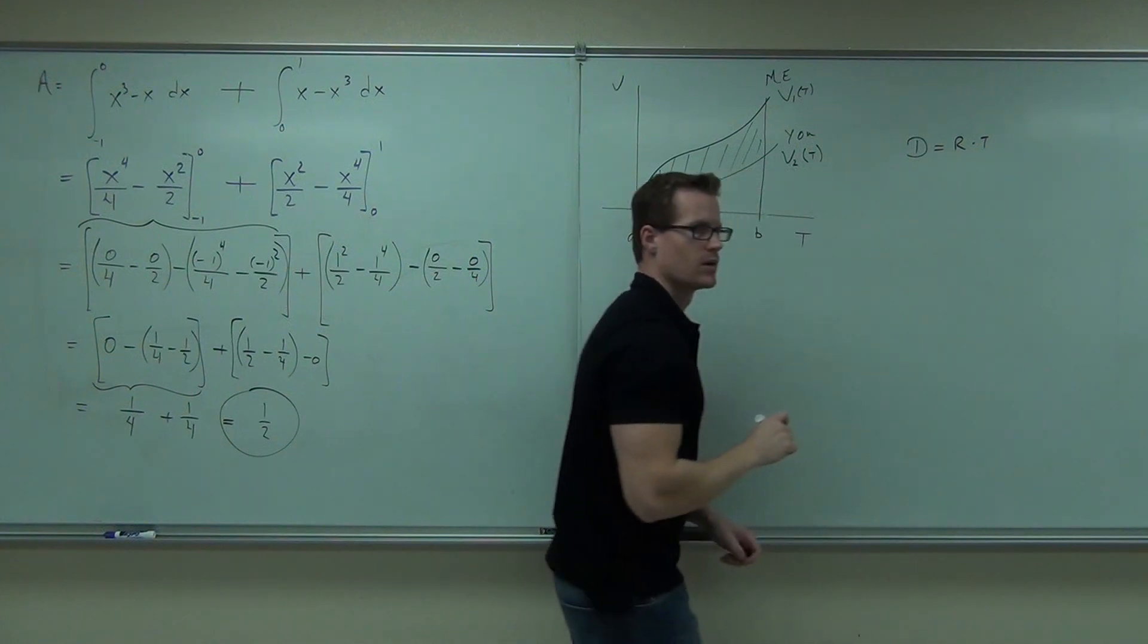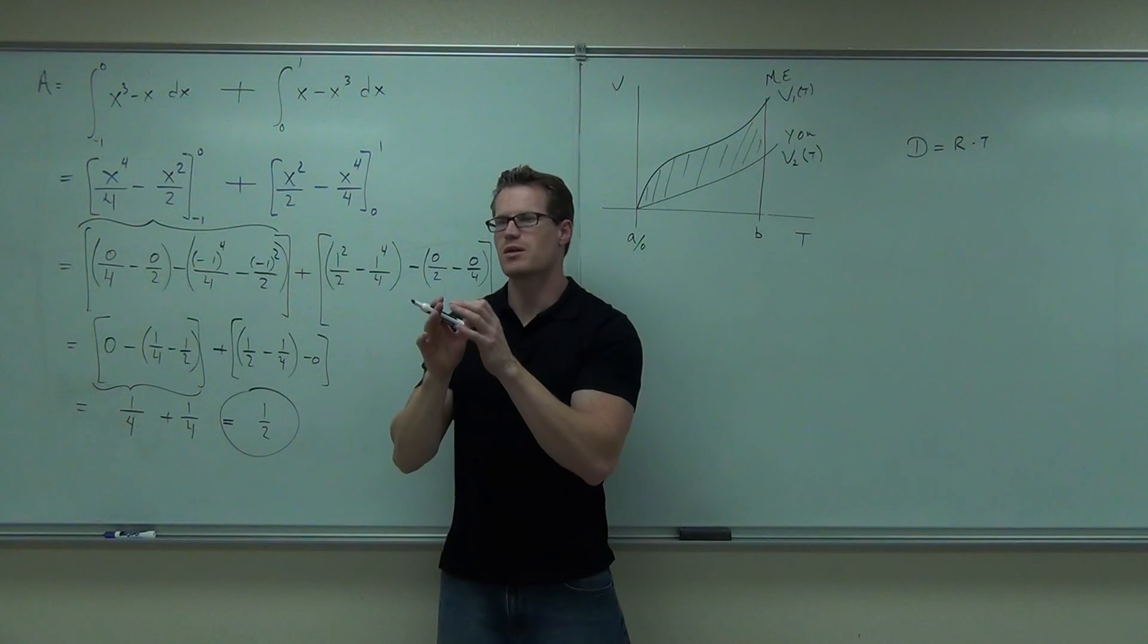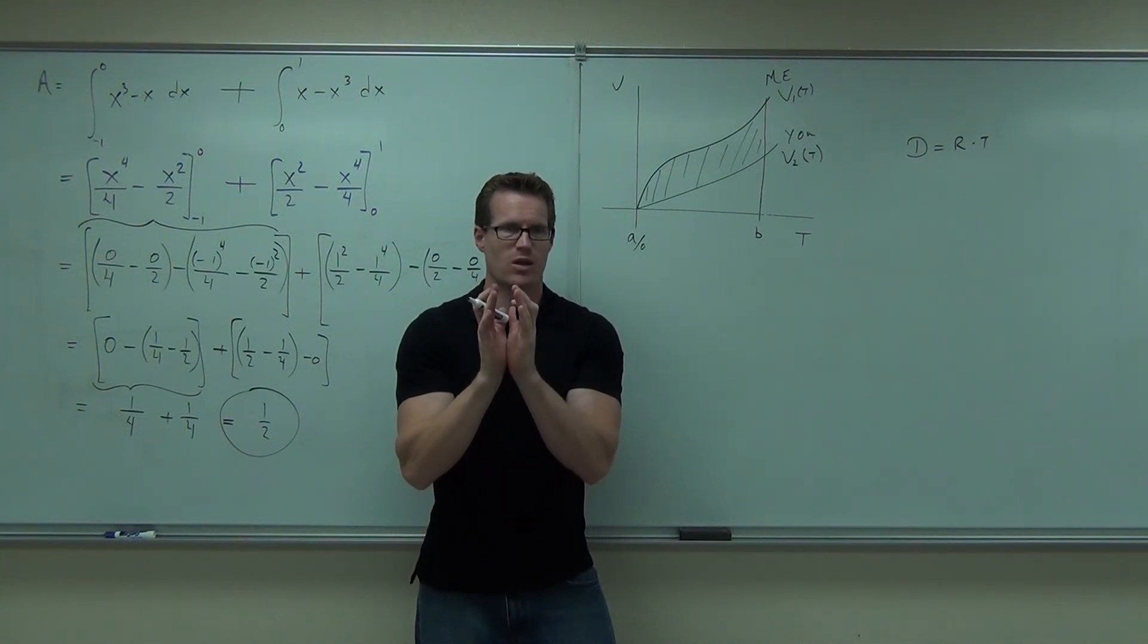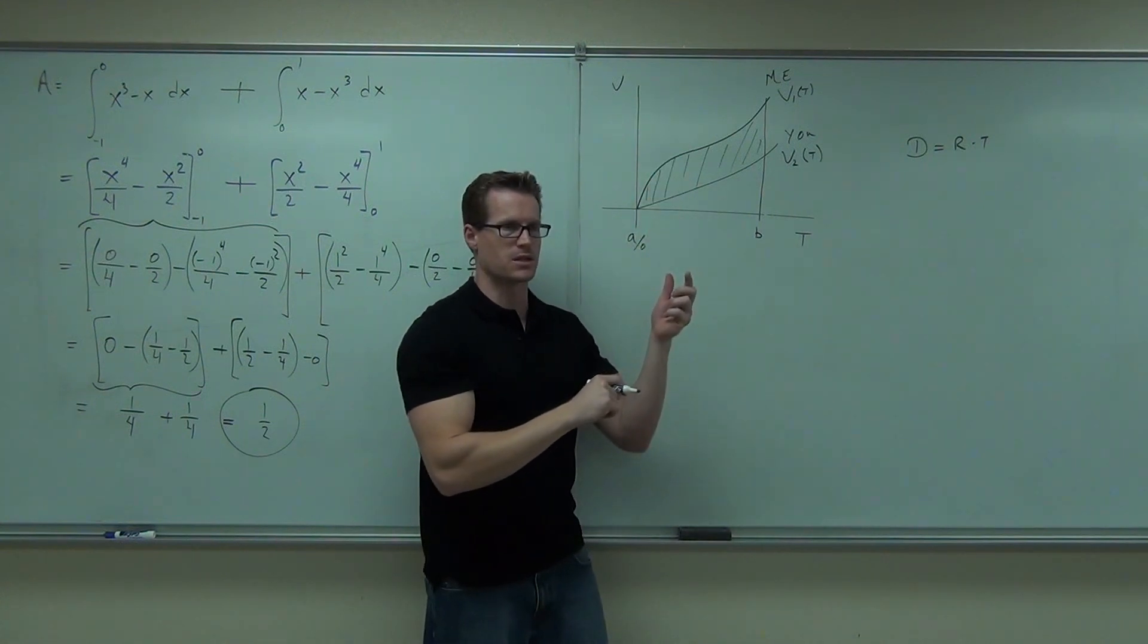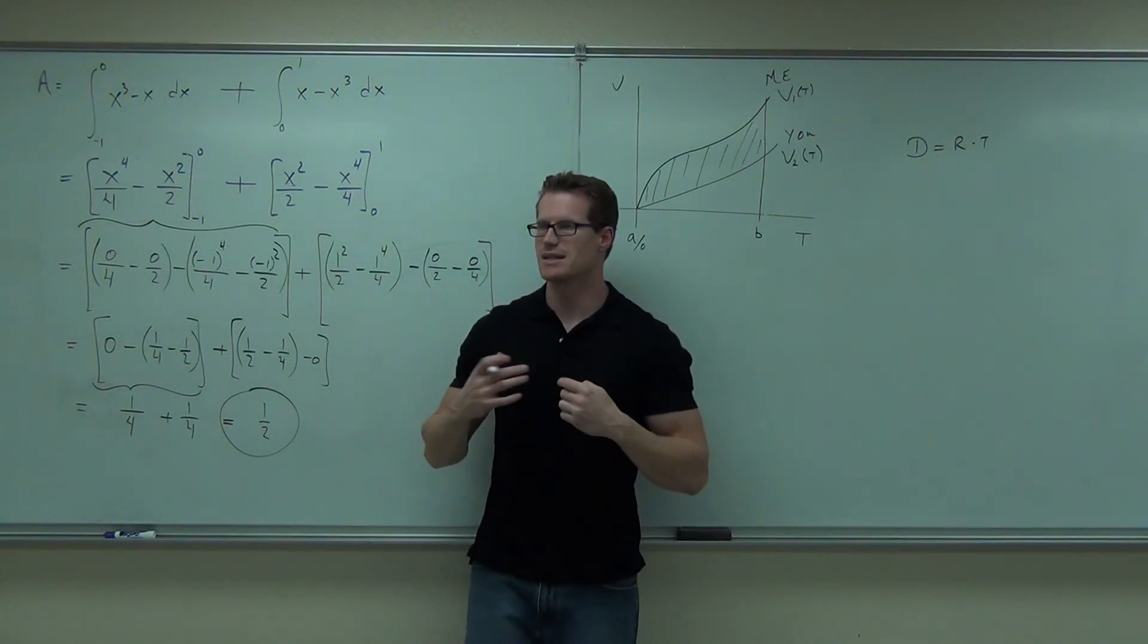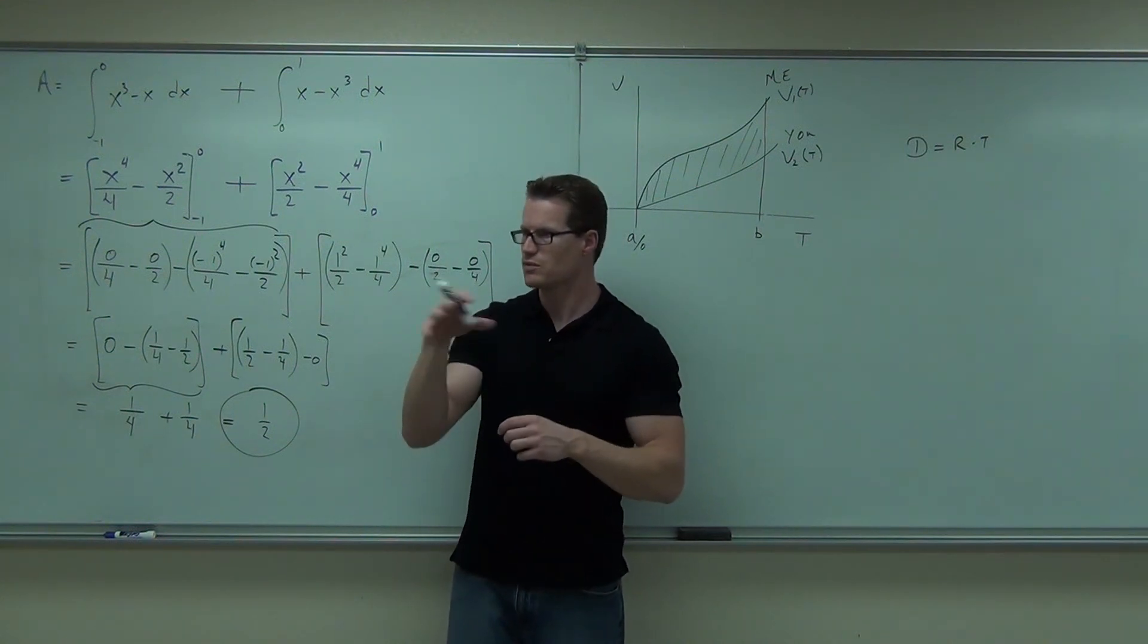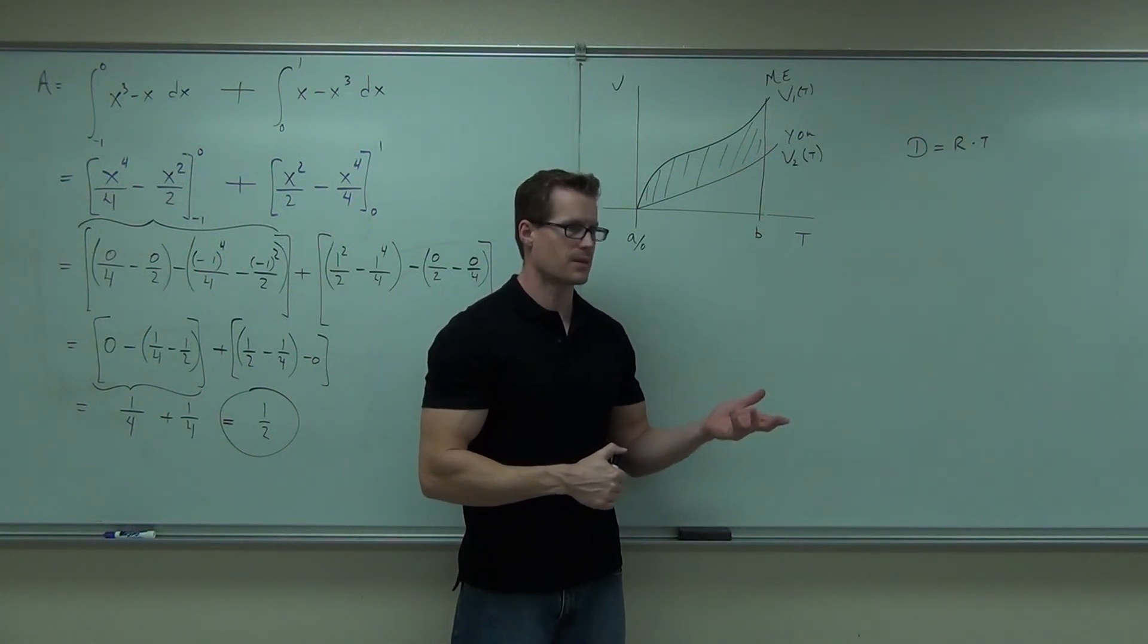You ever seen that before? Distance equals rate times time, right? That is an area. Basically, what you're doing in these, think back to what you're actually doing. What you're actually doing here is finding little rectangles, right? And adding them all up. A little rectangle would be a little piece of time times a little piece of velocity. Time times velocity is a distance. So what this area represents is the distance that I beat you. At the end of this, the distance between my car and your car. Do you get the idea? That's kind of cool. So given these two velocity curves, we can figure out not only who won the race, but how much they won the race by. That's neat.